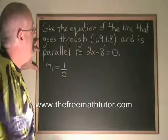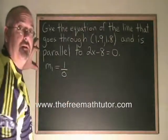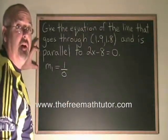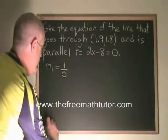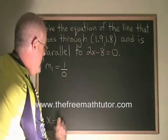Any line parallel to a vertical line must also be a vertical line. And the only vertical line that goes through this point would have to have the equation x equals 1.9.